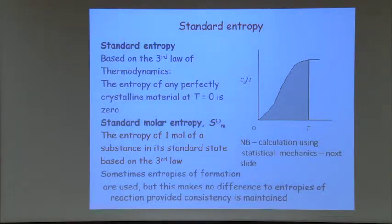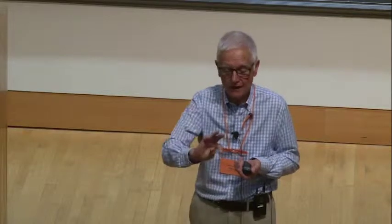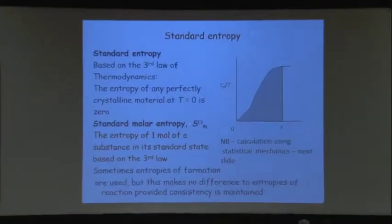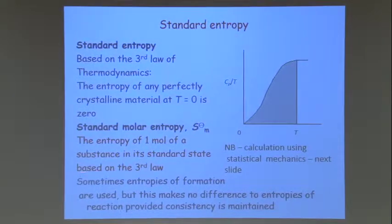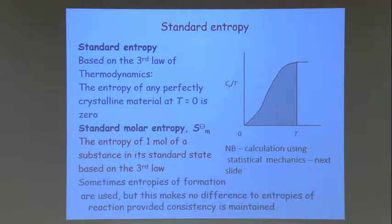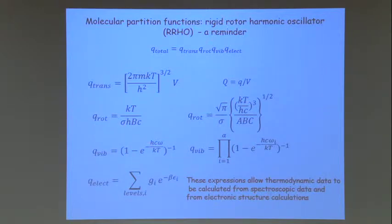Standard entropies are based on the third law of thermodynamics, which says that the entropy of any perfectly crystalline material at T equals zero is zero. At zero Kelvin all molecules sit in their lowest energy level — there's only one way of arranging them, so W equals one and S equals k log W equals zero. Perfectly crystalline because you don't want any configurational entropy. CO has a very small dipole and the arrangements as you freeze it down have very similar energies, leaving a configurational entropy at zero Kelvin — you need to account for that when applying the third law.